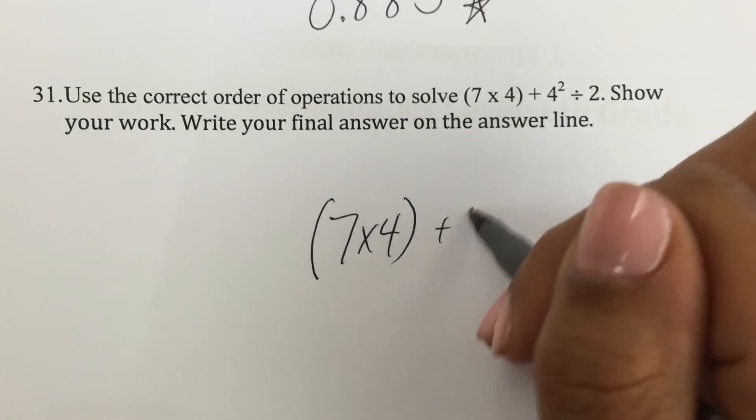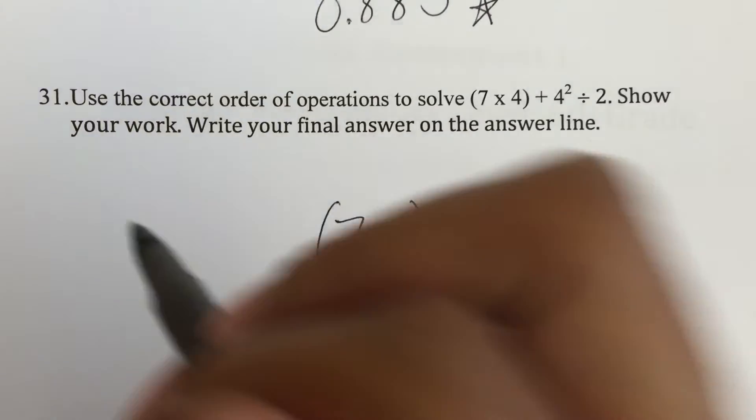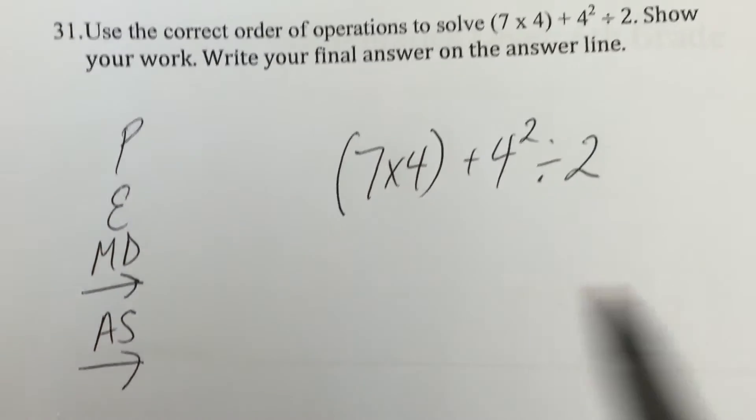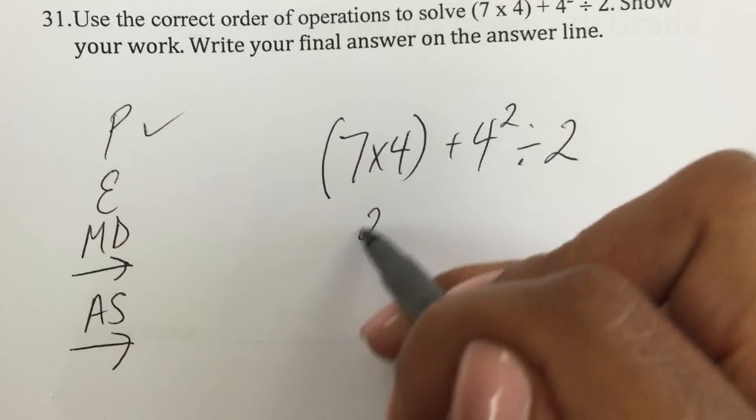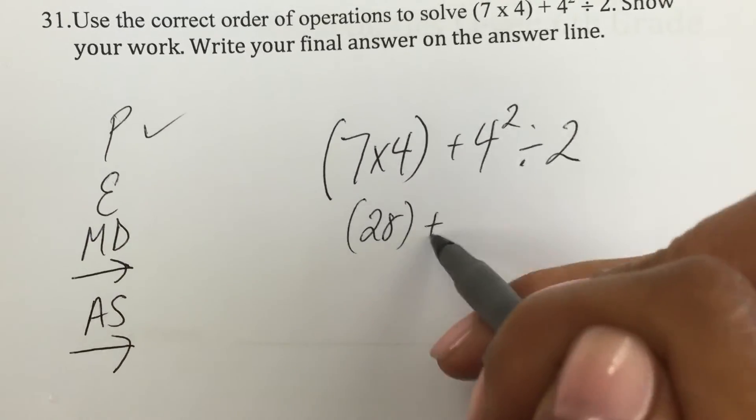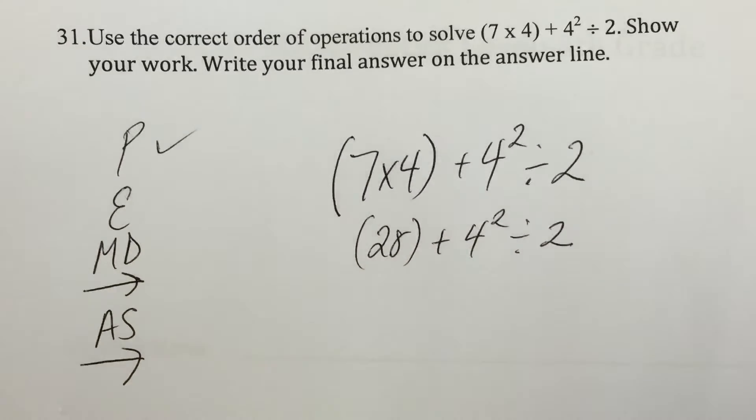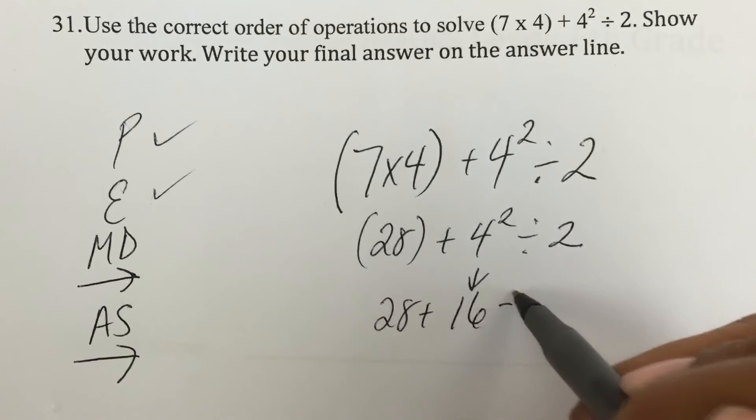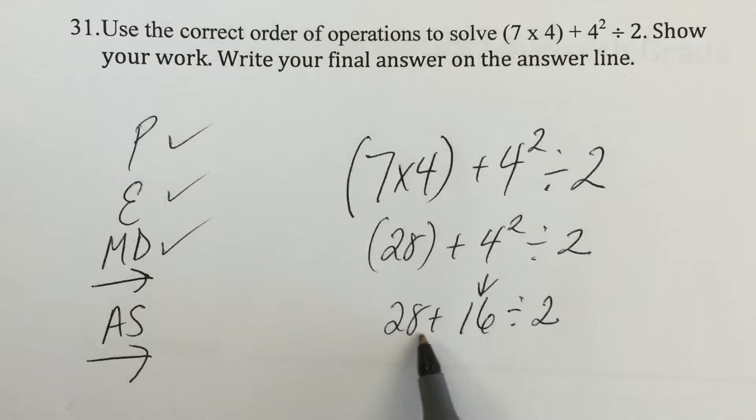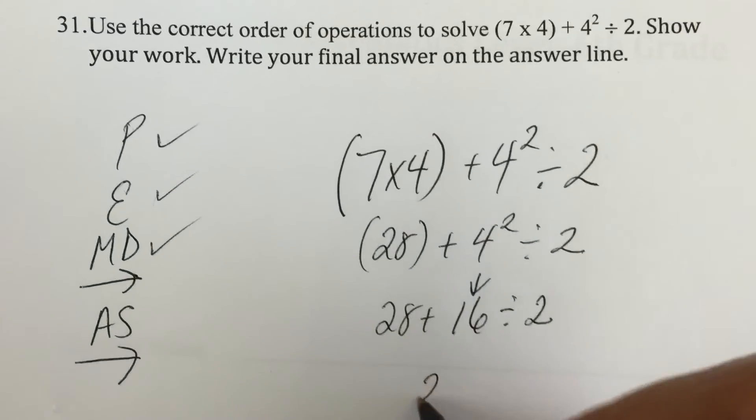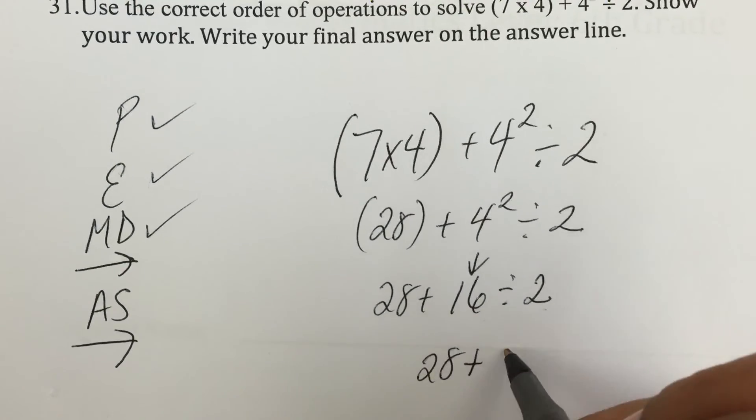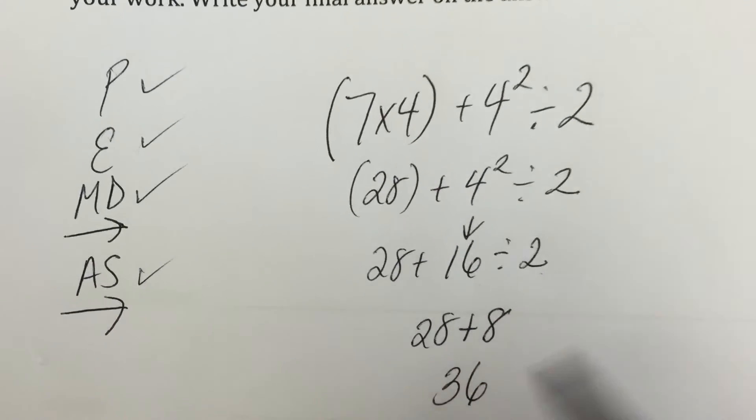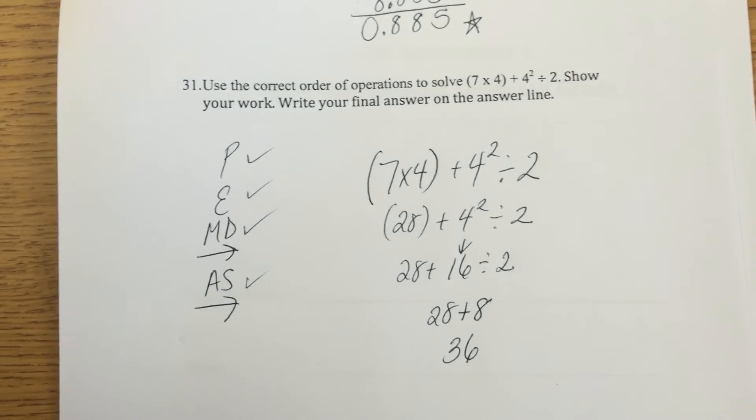7 times 4 plus 4 squared divided by 2. So I'm going to do my parenthesis first. 28 plus 4 squared divided by 2. Now I'm going to do my exponents. 28 plus 16 divided by 2. Multiply or divide from left to right. I'm going to do this part first. 28 plus 8. And now my adding or subtracting 28 plus 8 is 36. So that's the last part.